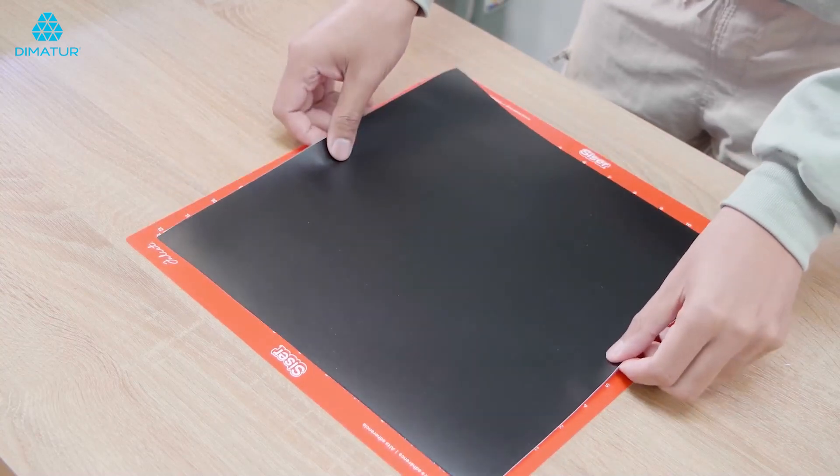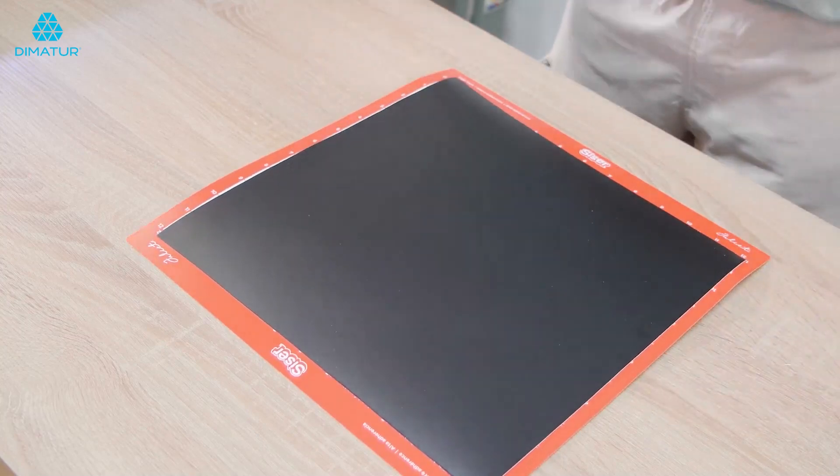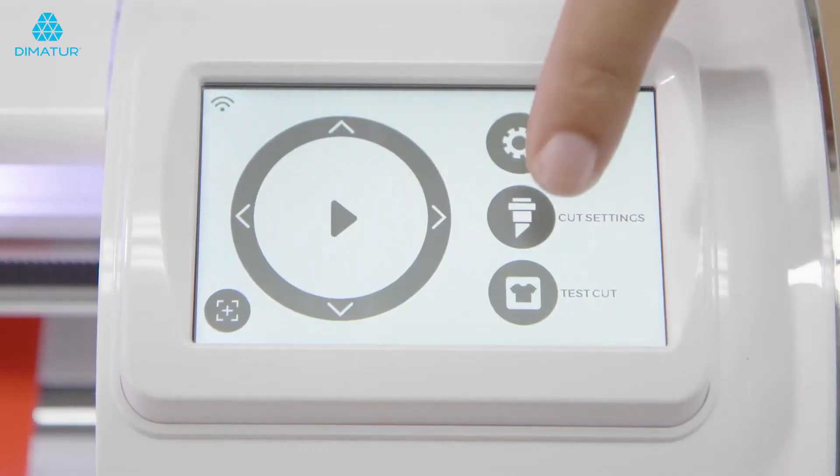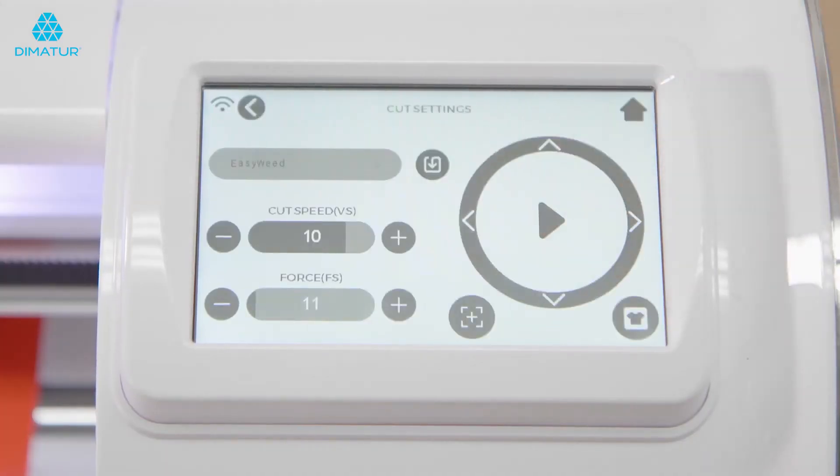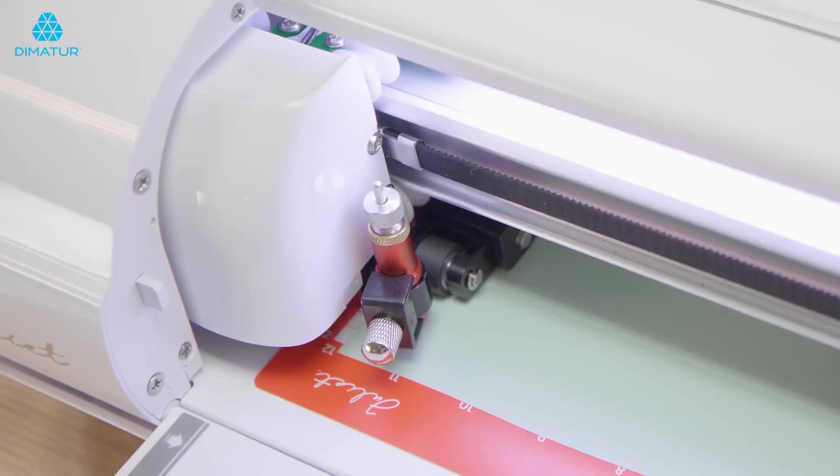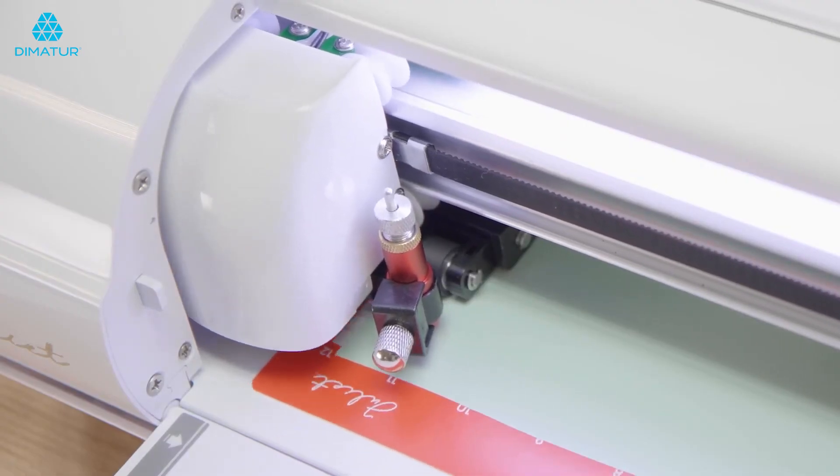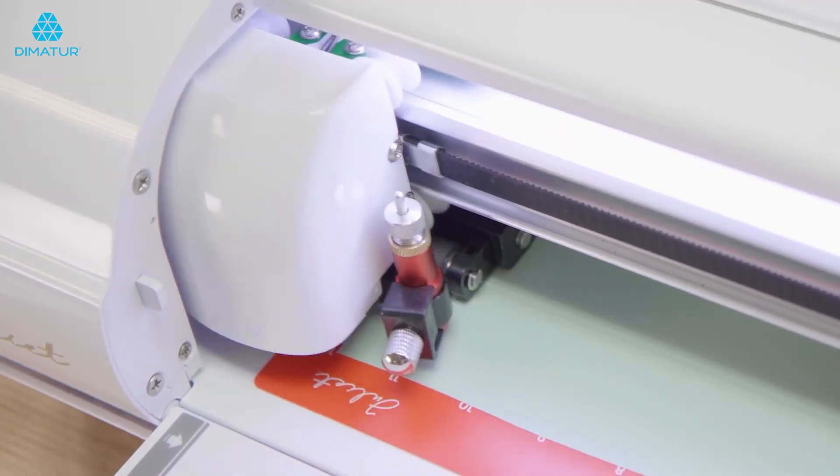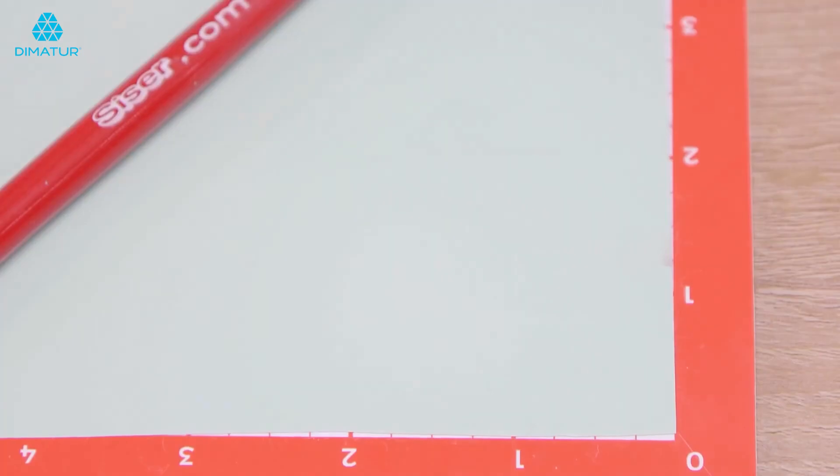Once the material is loaded, select the appropriate cut setting for your project or create your own, and don't forget to test cut with the convenient button directly in the cut settings menu. After executing your test cut, check to ensure that this setting is right for you.